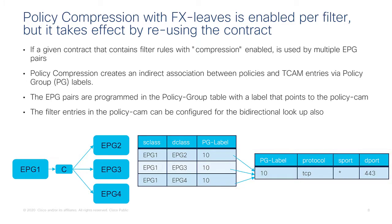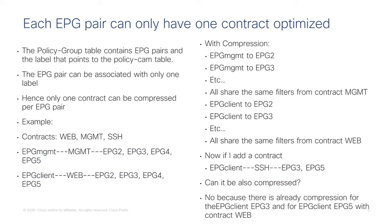Back to the previous example with outside-to-web and app-to-outside using the same port 80 or 443 entry — with this feature there will be only one entry in the policy cam, and that entry is also used in both directions of traffic. To utilize this feature, you need to enable compression at the filter level, and you need to reuse the same contract name. Even if compression is enabled at the filter, multiple EPG pairs must use the same contract.